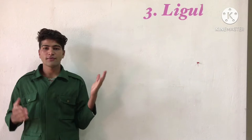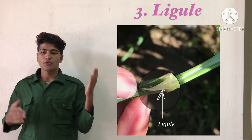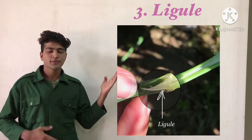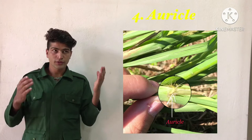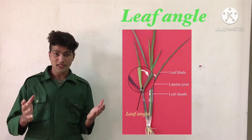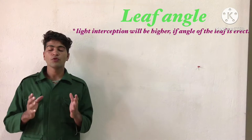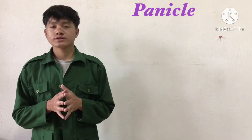The leaf ligule is a thin, white triangular membrane tissue which helps regulate moisture and prevents the entry of rainwater. The auricle is located at the boundary of sheath and collar, which helps distinguish rice from barnyard grasses. We also learned about leaf angle, which determines photosynthesis and respiration — when the leaf angle is more erect, there is more light interception and more photosynthesis.